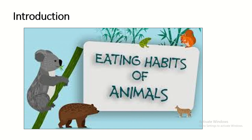Eating habits of animals. Animals cannot prepare food on their own and so are dependent on plants. Some animals eat plants directly, while some eat animals which feed on plants. So, directly or indirectly, all animals are dependent on plants.